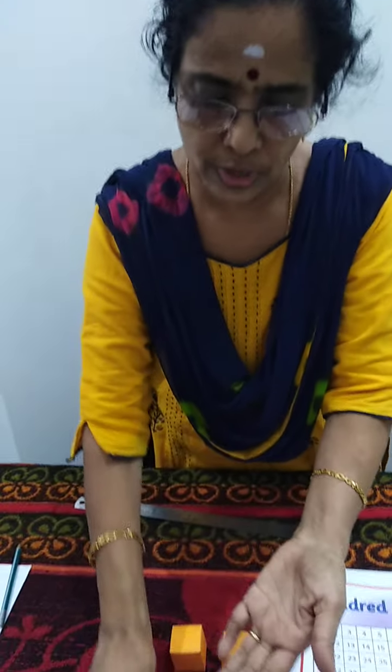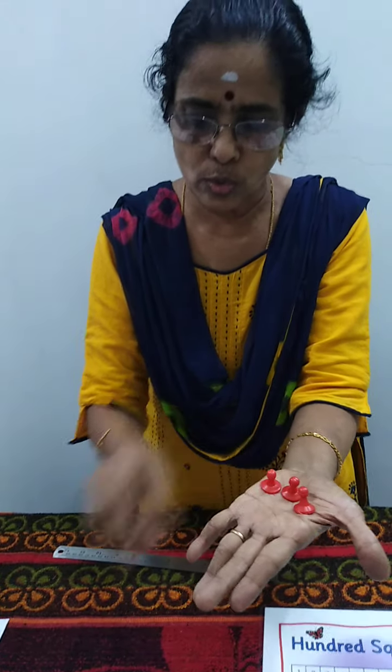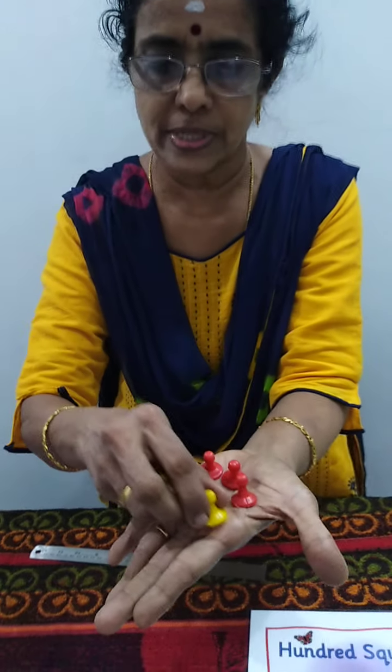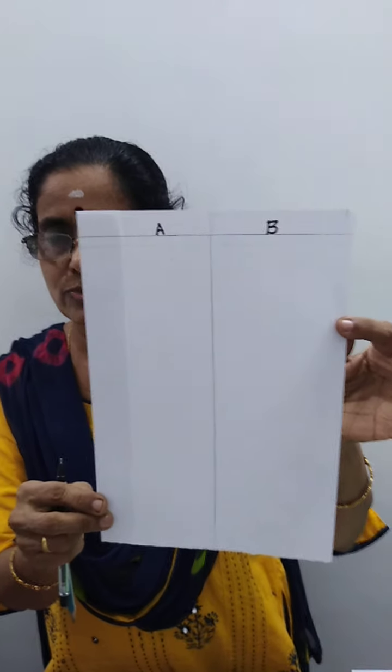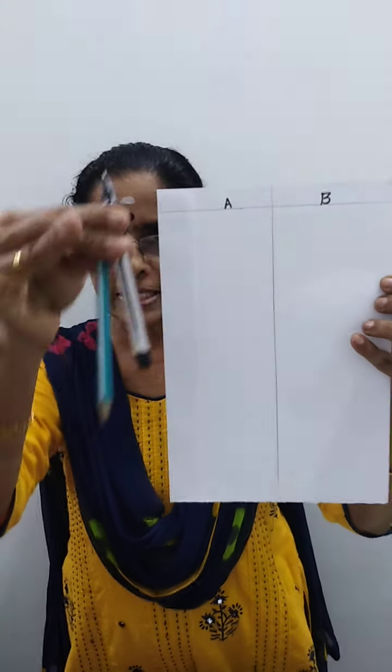We need 2 sets of game pieces. If you don't have game pieces, you can use snake and ladder coins, or even shirt buttons. We also need a score sheet, and a pen or pencil to note down the points.